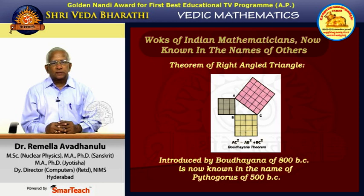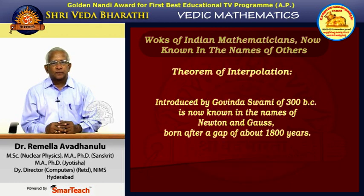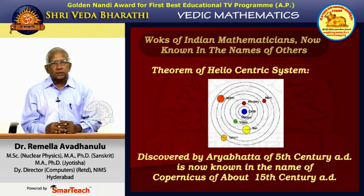During the alien rule, the same mathematics were introduced through the English language in the curriculum in India, but with the names of original Indian contributors suppressed. For illustration, the Baudhayana Siddhanta related to the areas of the sides of a right-angled triangle is now known in the name of Pythagoras of about 500 BC, who was born about 3 centuries after Baudhayana. The theorem of interpolation introduced by Govinda Swami of 300 BC is now known in the names of Newton and Gauss, born after a gap of about 1800 years. The theory of earth revolving around the sun was recorded by Aryabhatta in the 5th century AD; however, it is known in the name of Copernicus, who was born 1000 years after Aryabhatta. There are several examples of this kind.